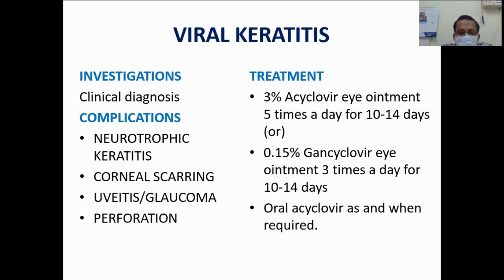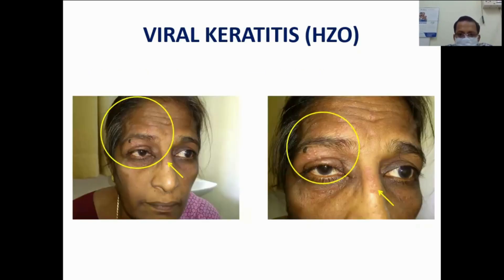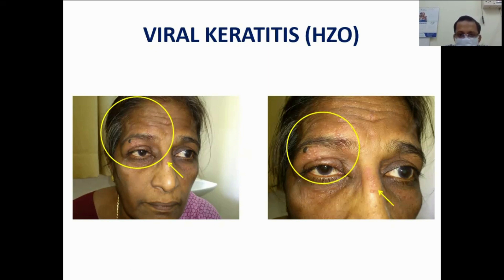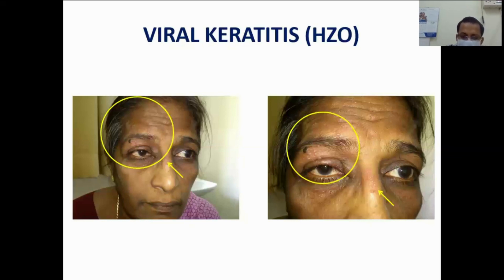Further complications include inflammatory glaucoma and corneal perforation. In herpes zoster ophthalmicus, apart from the eye it also affects the skin around the eye in the same dermatome supplied by the trigeminal nerve, which also supplies the cornea. When the ala and tip of the nose are affected, there is approximately 70–80% chance the cornea is also affected. This sign is called Hutchinson's sign, and whenever we see the tip and ala of the nose affected we must check the cornea for lesions.